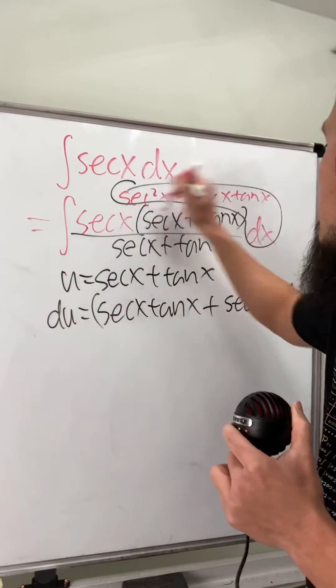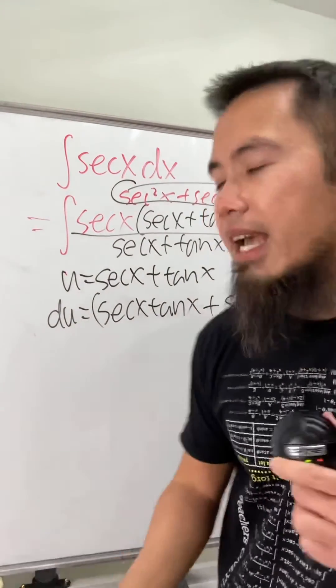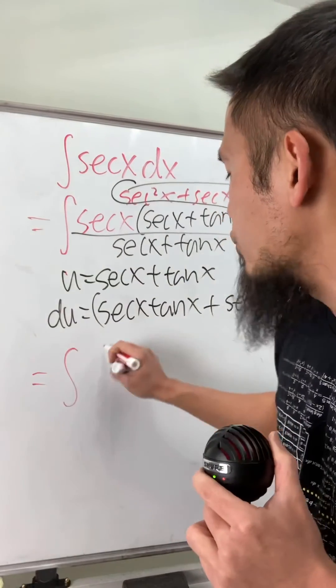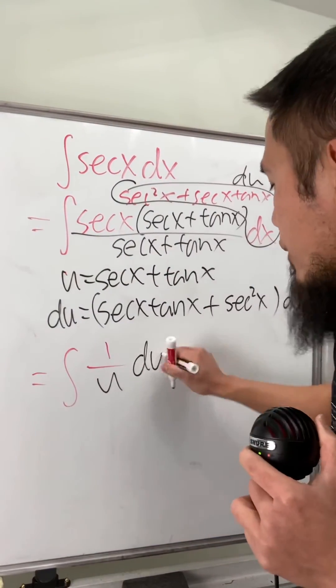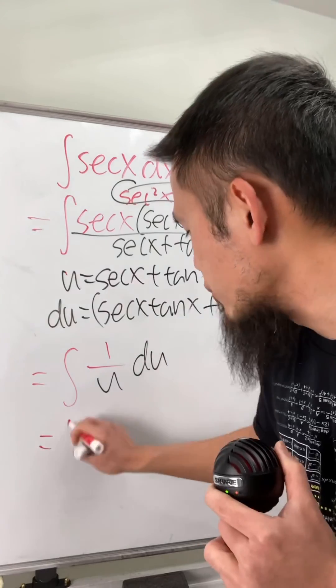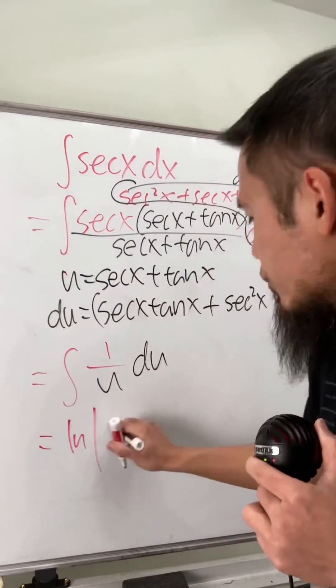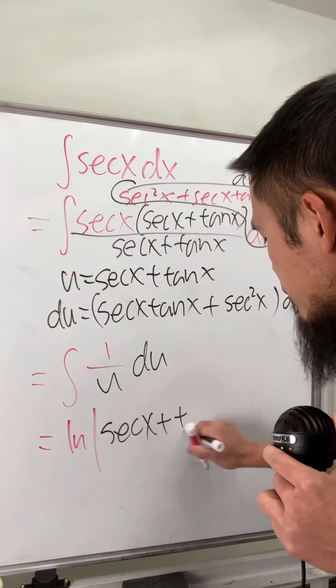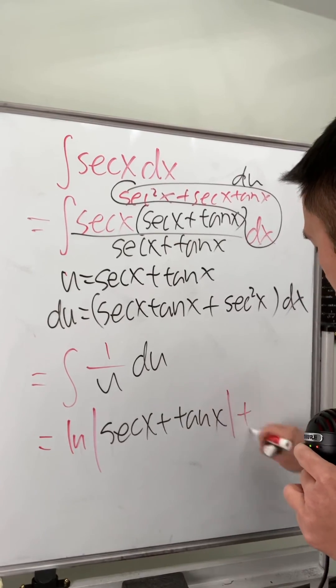Now this right here is just going to be the integral 1 over u and then this right here is the du. So you can see that it's a similar situation, right? So we have natural log absolute value of u. u is equal to secant x plus tangent x and then we are done. Put a plus c.